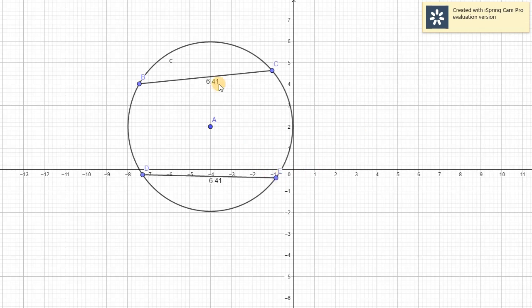So we have this segment BC and segment DE. And what we need to do is we need to find the perpendicular distance. Remember that this 6.41 and 6.41, they are the measure of BC and DE. It just simply states that they are congruent. So what we need to do now is we need to find the perpendicular measure of this given chord.